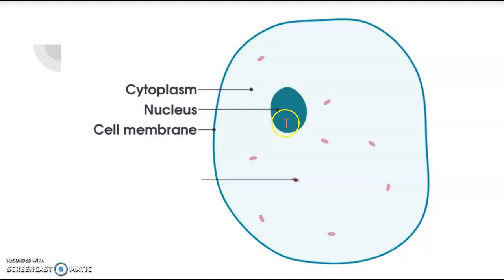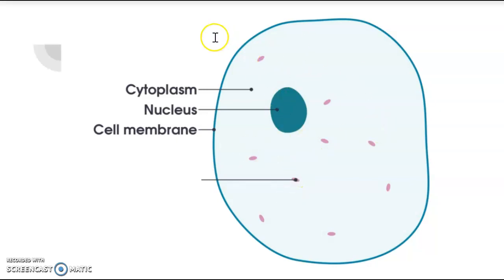So visually, in a eukaryotic cell it's a nucleus; in a prokaryotic cell it may just be DNA — along with cytoplasm and a cell membrane.